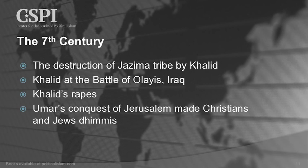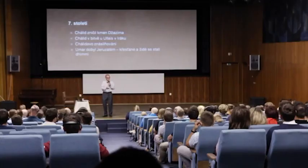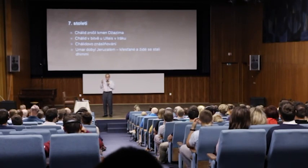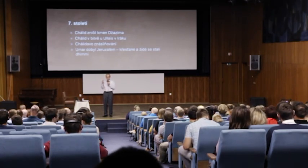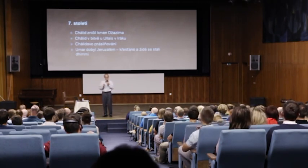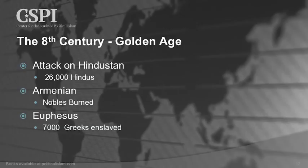In the next century, this is the first century of the Golden Age — surely all of you have heard of the Golden Age of Baghdad. I'm going to show you what was happening in quality as well as quantity during this expansion. Islam moves to the east; there are attacks in Hindustan where 26,000 Hindus die in one battle. In Armenia, bishops and nobles invited the Muslims to a debate; after it was over, the Muslims pushed everyone into the church and burned it down on top of them. In Ephesus, 7,000 Greeks are enslaved.